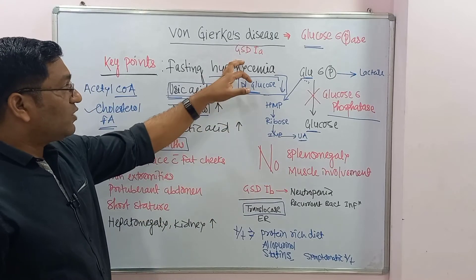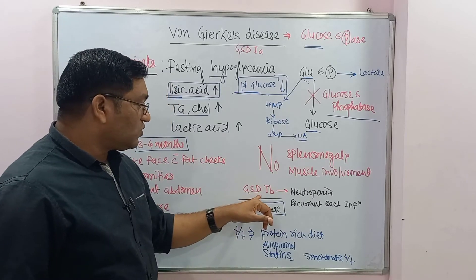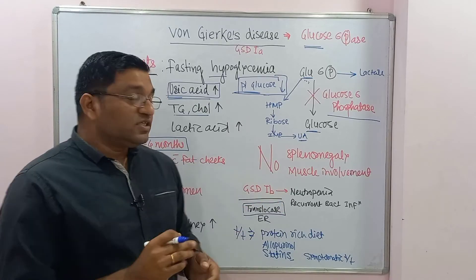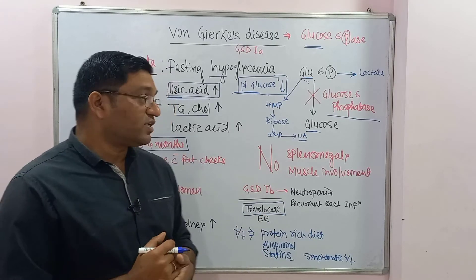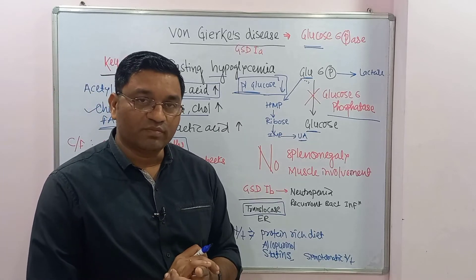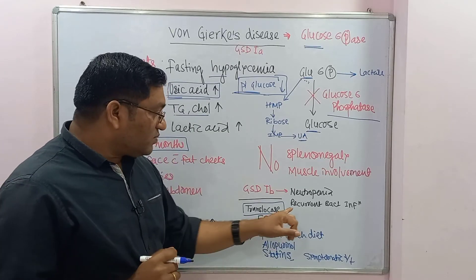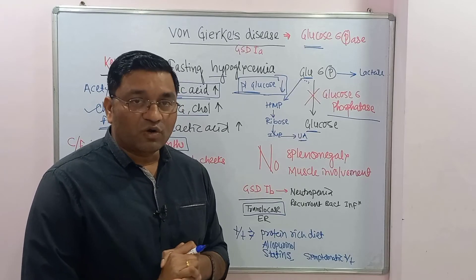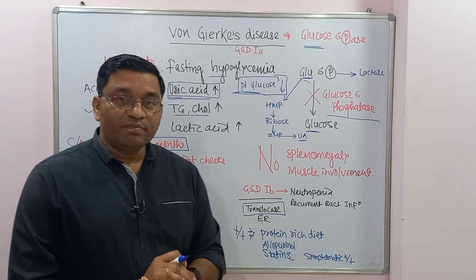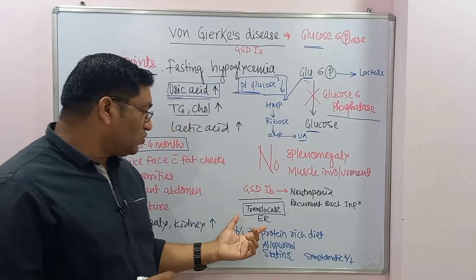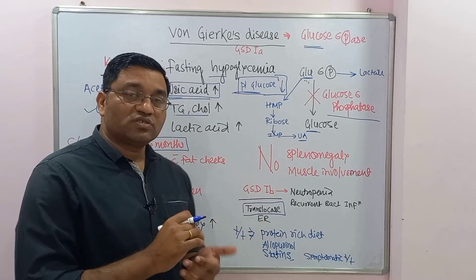This is glycogen storage disorder type 1A. There is another variant known as glycogen storage disorder type 1B, which is due to a transporter defect — specifically a defect in the translocase responsible for transport of glucose-6-phosphate across the endoplasmic reticulum. The symptoms are the same as type 1A, with additional features of neutropenia, decreased neutrophil count, and recurrent bacterial infection.